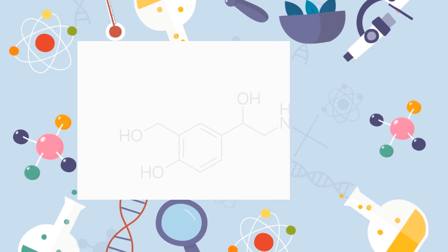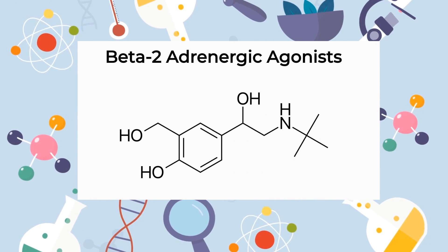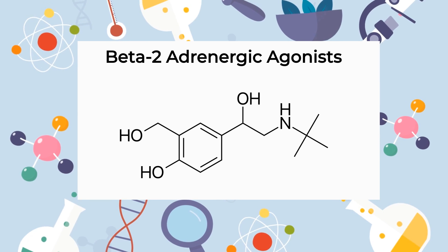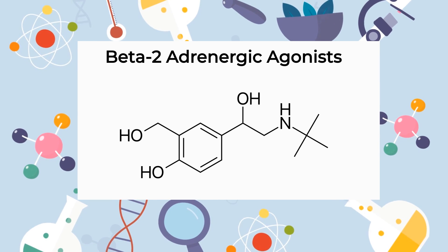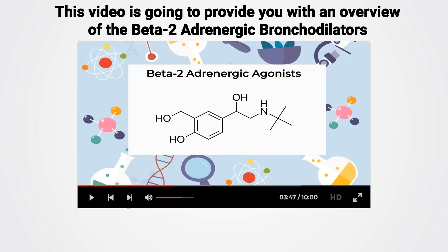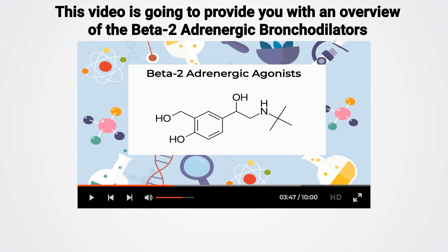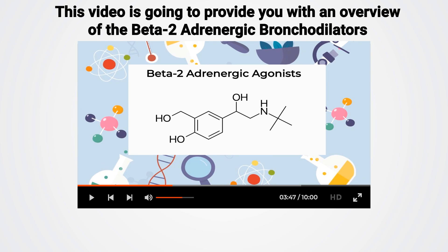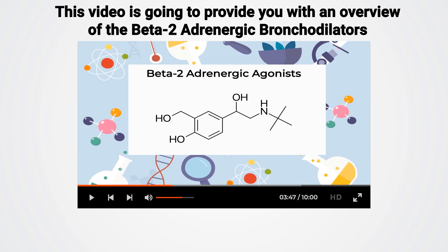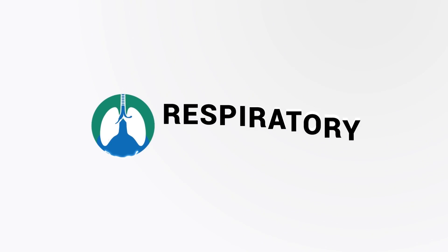Beta-2 adrenergic agonists are a class of medications that are common in the field of respiratory care. They're used to treat obstructive conditions such as asthma and COPD. This video is going to provide you with an overview of the beta-2 adrenergic bronchodilators, hopefully to help make the learning process easier for you. So if you're ready, let's get into it.